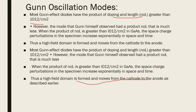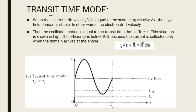The first Gunn oscillation mode is the transit time mode. In this mode, the product of frequency times length is 10 raised to 7 centimeters per second. The applied voltage has not reached the sustaining level. Current is collected only when the domain arrives at the anode, giving an efficiency below 10 percent. It produces sustained oscillations, but they are not very effective.